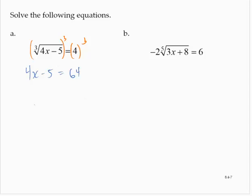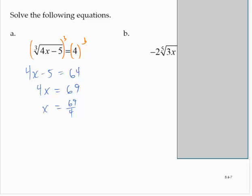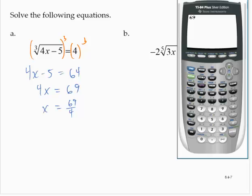Then we'll solve for x by adding 5, so 4x is equal to 69. Dividing by 4, x is equal to 69 over 4, or 17.25.